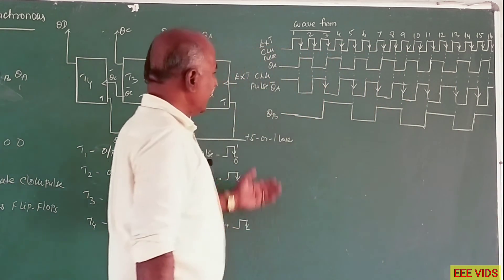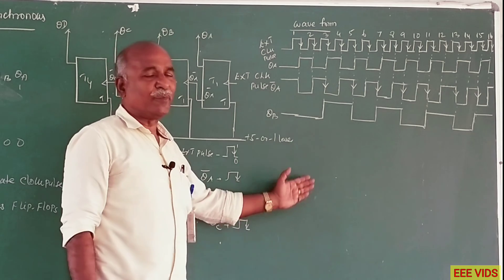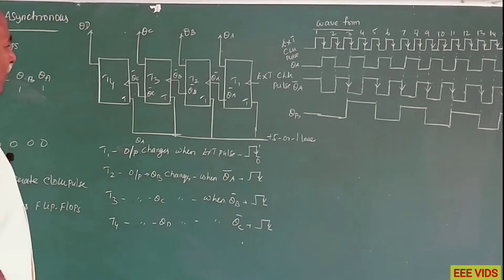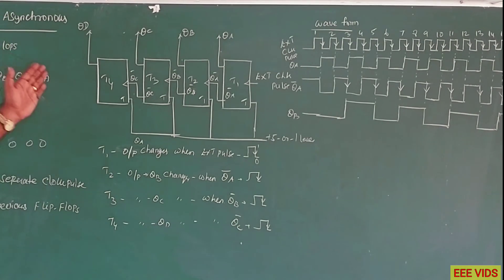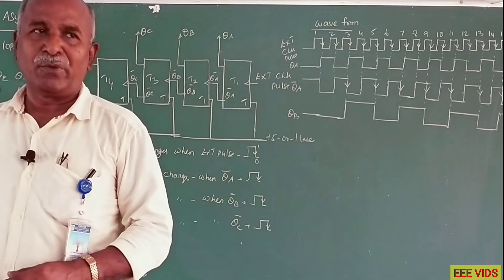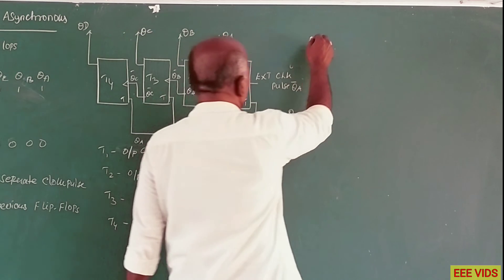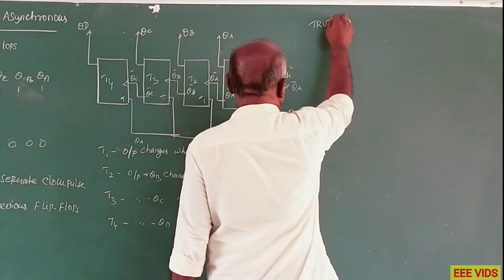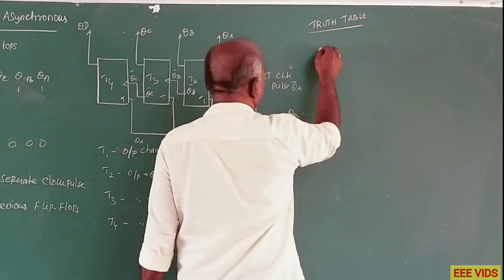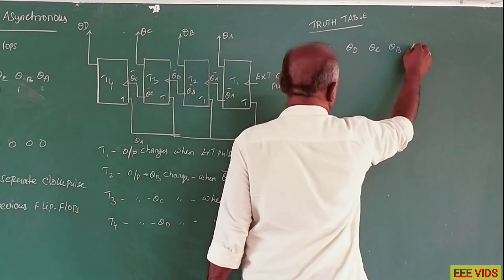So we have QB, QB bar, QC bar, and QD bar waveforms. This waveform represents QA, QB complement. Now for the truth table: columns are clock pulse, QD (2 power 3), QC (2 power 2), QB (2 power 1), QA (2 power 0).